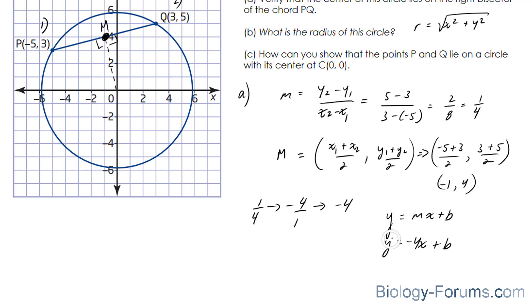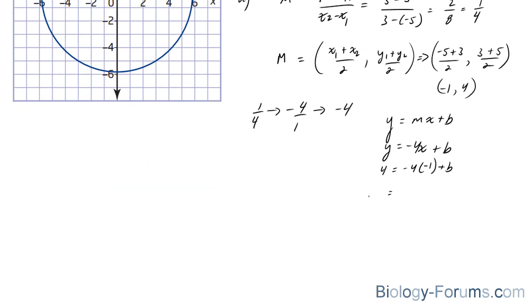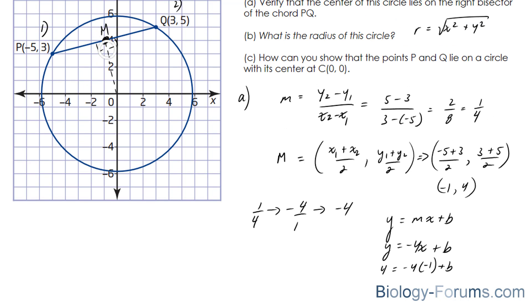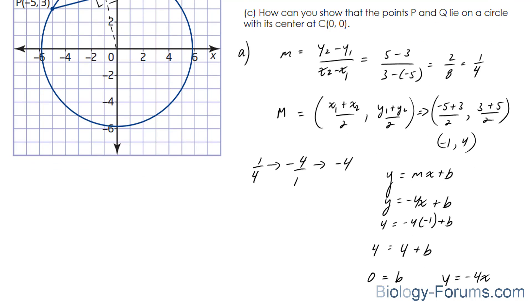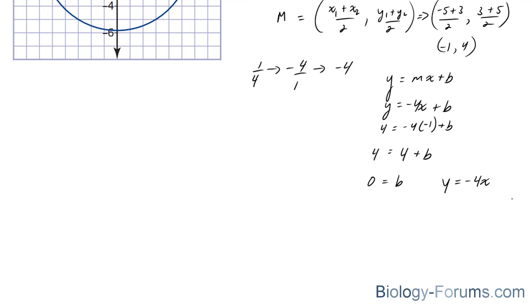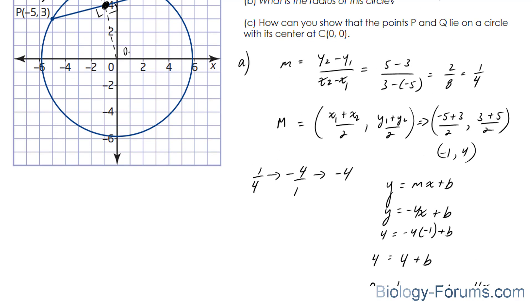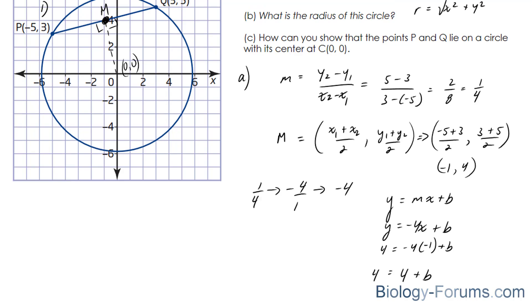4 is equal to negative 4 times negative 1 plus b. 4 is equal to positive 4 plus b. Bring the 4 over. You end up with 4 minus 4. And we end up with a b value of 0. So, we end up with y is equal to negative 4x plus 0. And that is the equation that represents the bisector. Now, given that the y-intercept is 0 and the center is at 0 and 0 visibly, that verifies question A.